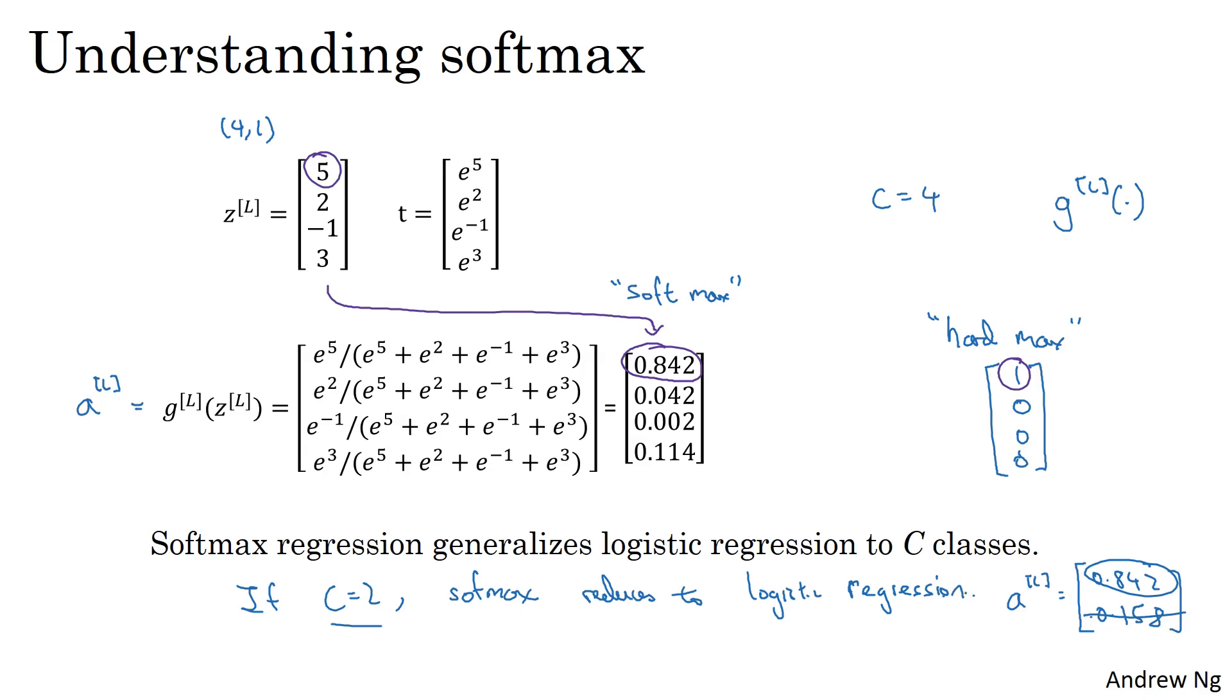So that wasn't much of a proof, but the takeaway from this is that softmax regression is a generalization of logistic regression to more than two classes. Now, let's look at how you would actually train a neural network with a softmax output layer. So in particular, let's define the loss function you use to train your neural network.